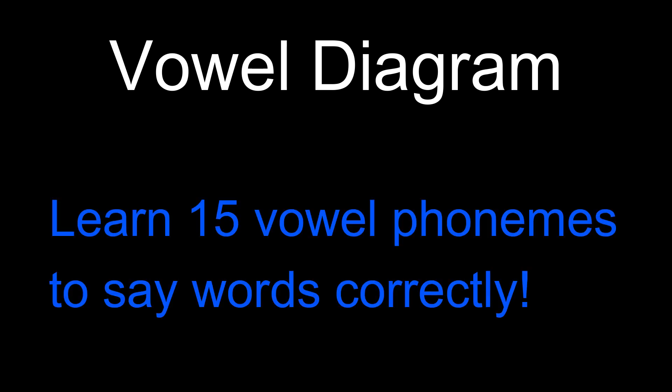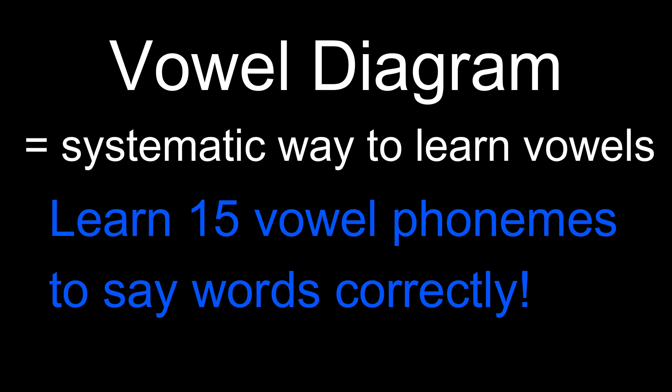Vowel Diagram. In the previous section, we learned that there are about 15 vowel phonemes in Standard American English. Our goal is to learn all these sounds so that we can say words correctly. So in this section, we aim to find a way to study them systematically.